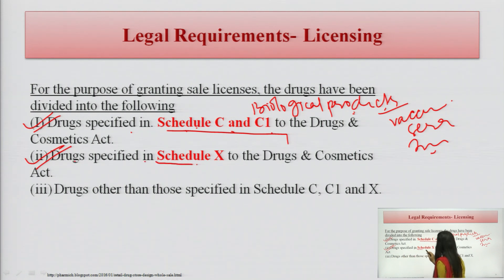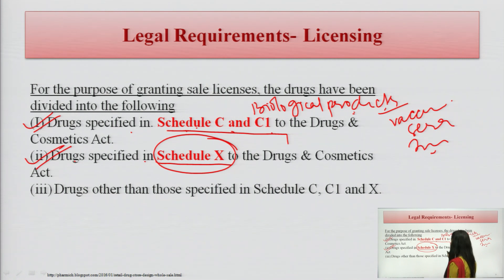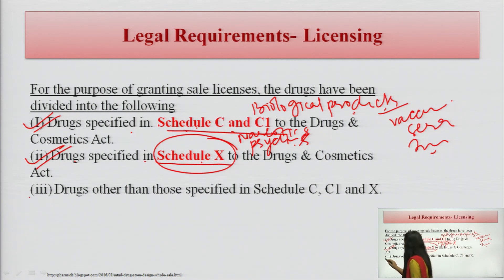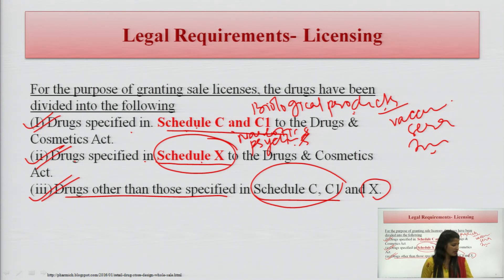Drugs specified in Schedule X are given only on a prescription basis — these are narcotic and psychotropic substances. Another category is the license for drugs other than those specified in Schedule C, C1, and X. These are the categories under which the license is granted for sale.